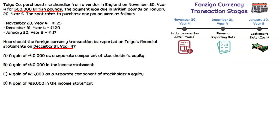We should be thinking about the five steps we learned in the lecture. We're going to calculate the initial transaction date, the reporting date, as well as the settlement date, and then we'll circle back and figure out the correct answer.